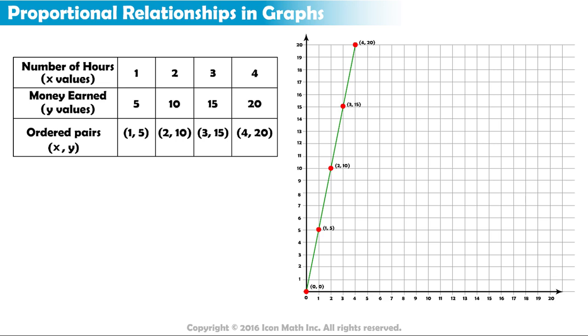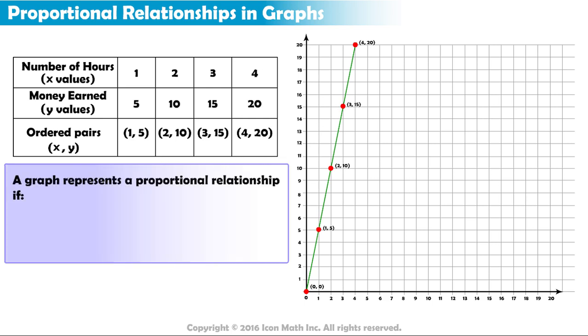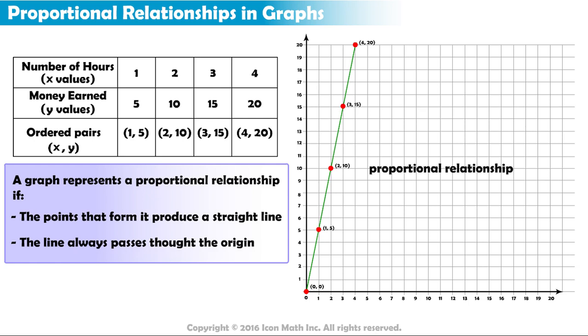This is not a coincidence. Whenever a proportional relationship is graphed, the points that form it always produce a straight line that passes through the origin.